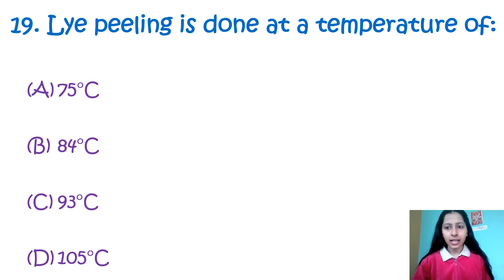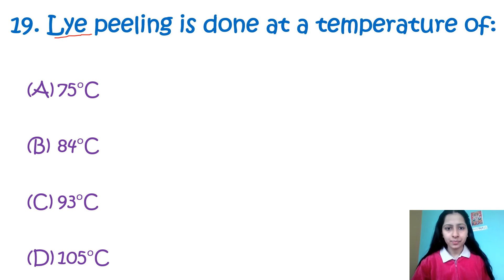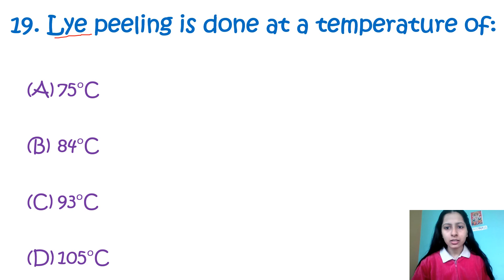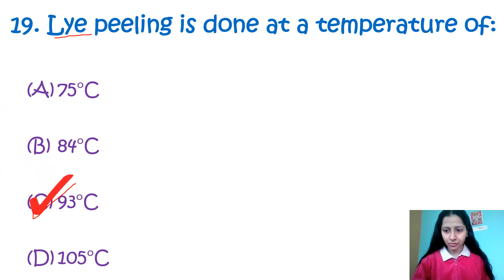Question 19: Lye peeling is done at a temperature of — option A: 75°C, B: 84°C, C: 93°C, D: 105°C. Lye peeling is a process for removing peels of fruits and vegetables by immersing them in lye solution — a hot caustic soda solution — followed by tumbling in a wash to remove skins and chemicals. This is done at a temperature of 93°C, that is option C.